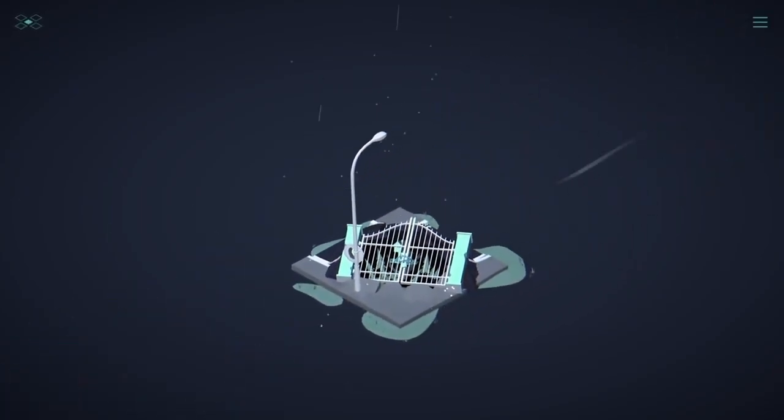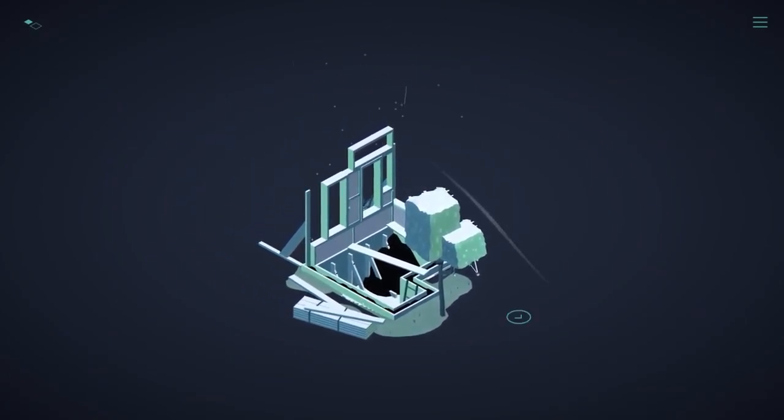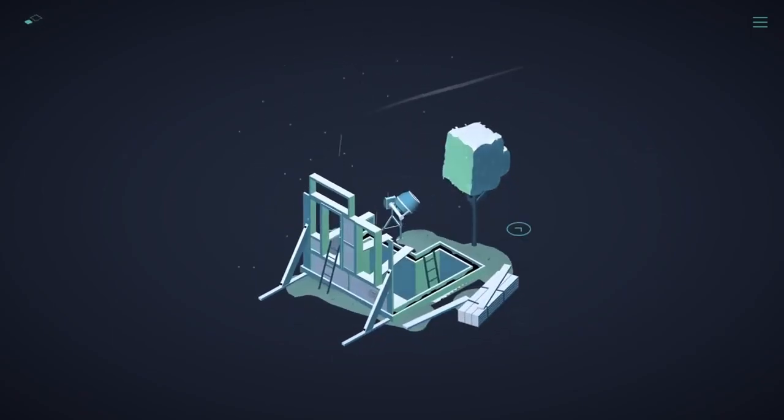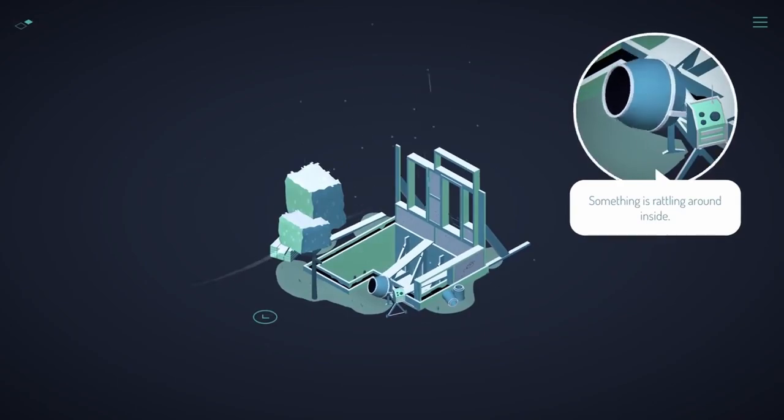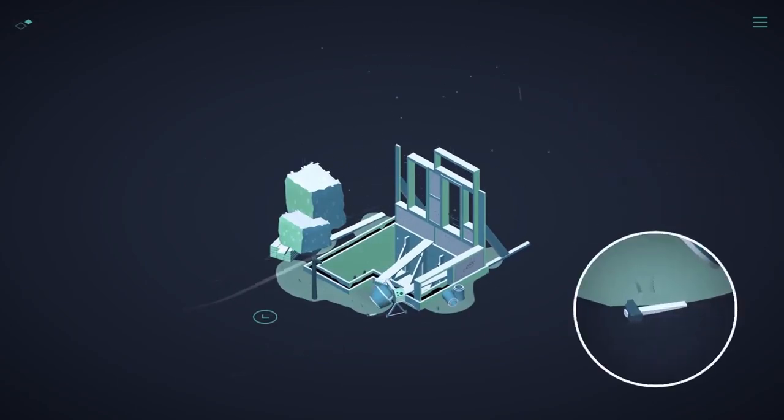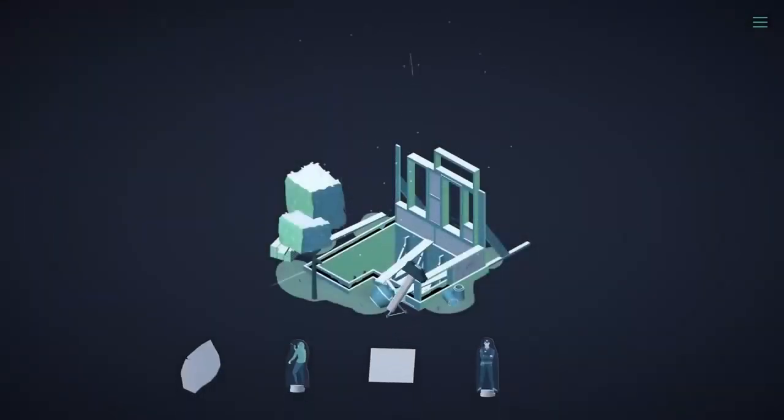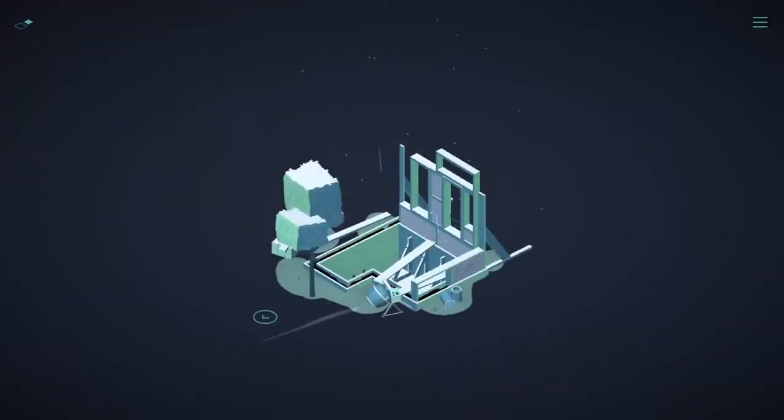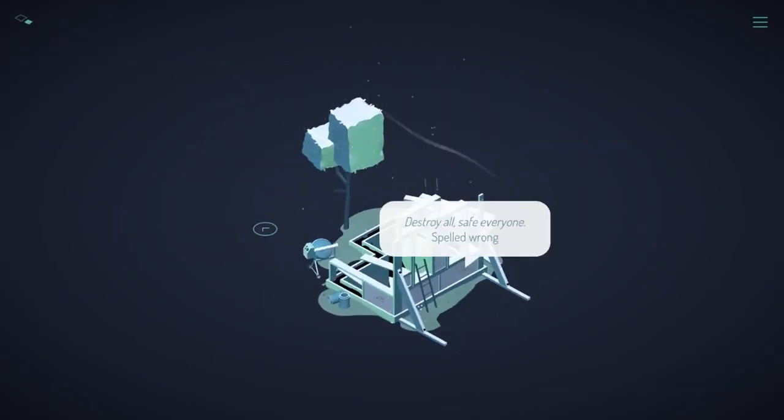Let's go around here some more first. This horse fell for black slash, like filthy snow. Something is rattling around inside. Destroy all. Save everyone. Spelled wrong.